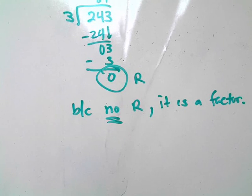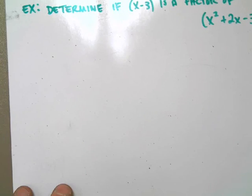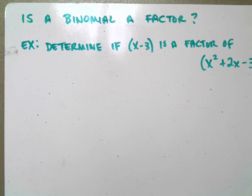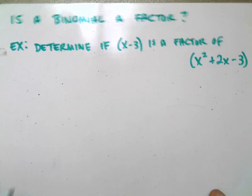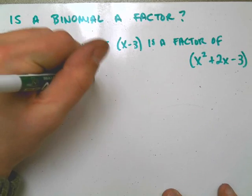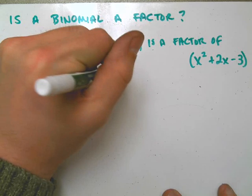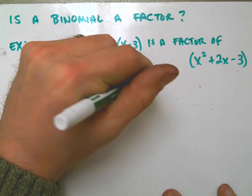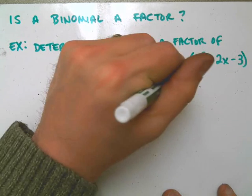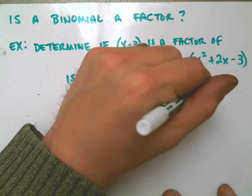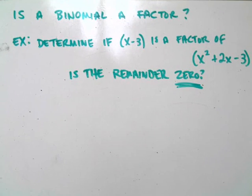So that should be a clue as to what we're doing here. We want to know with our problem, is the remainder 0? And that's going to let us know. So there's a couple different ways that you can do this. I can use long division, synthetic division, or synthetic substitution. It doesn't matter which method you use.